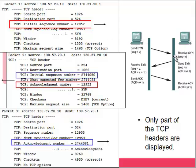Host A sends over 12,952. To acknowledge that number, we add 1 to it, so Host B sends back 12,953. When Host A receives 12,953, it knows it has been acknowledged — it sent its number, Host B incremented it by 1, and it received that back. Host B also needs to send its own sequence number: 2,744,080. Host A takes that number, adds 1, and sends it back. Host B sees its number incremented by 1 and knows it has been acknowledged. The three-way handshake is now complete and packets can be sent reliably.